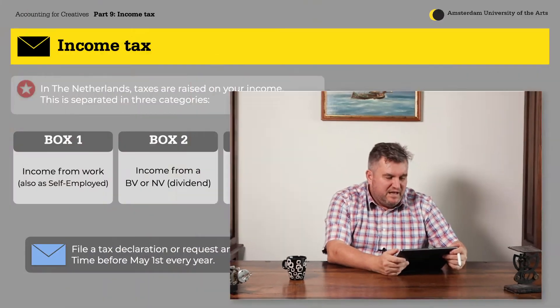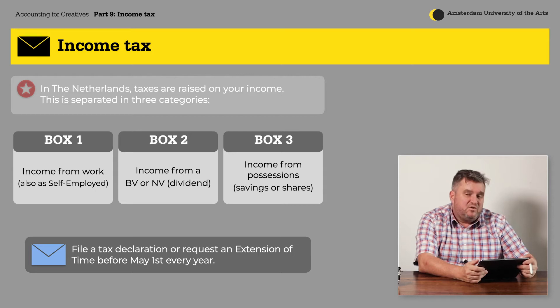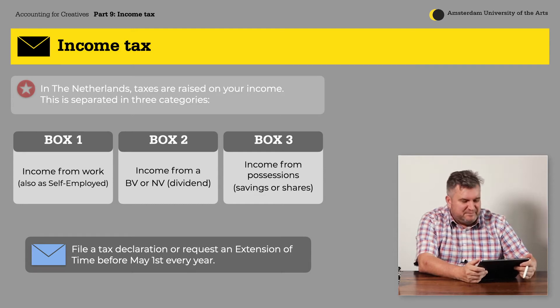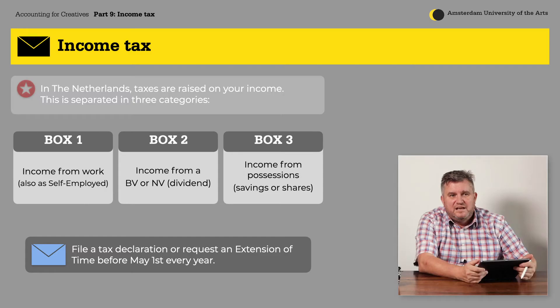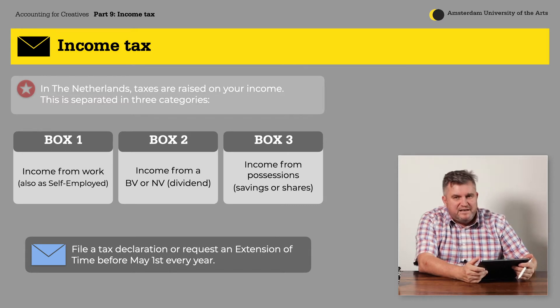In the Netherlands we have three boxes where we divide the income tax that you need to pay. Box number one is all the income you earn with work, also as a freelancer — this is the box we are mainly interested in today. Box number two is for if you have a big company like a BV or an NV and you receive dividends for your shares in this company.